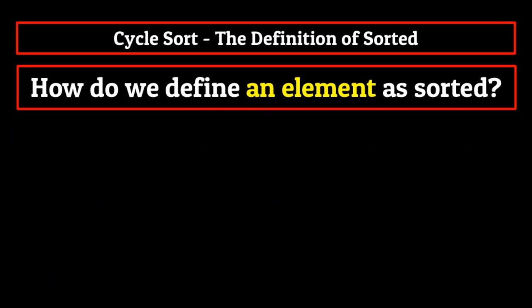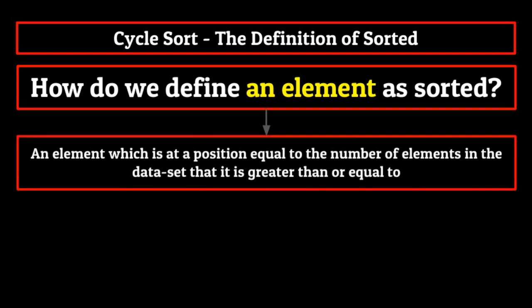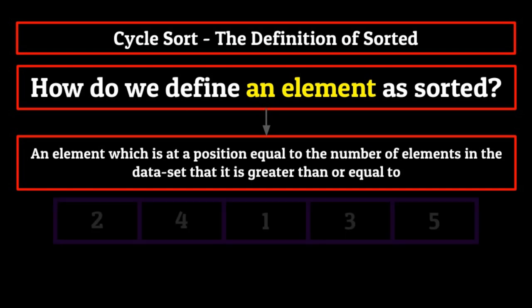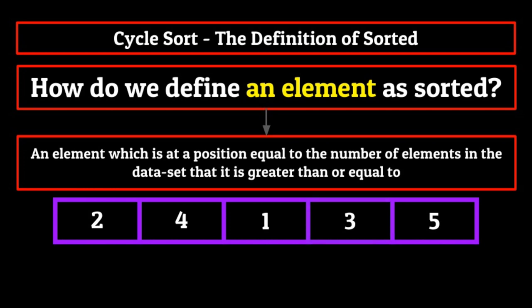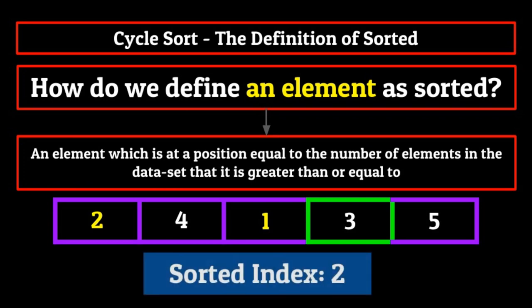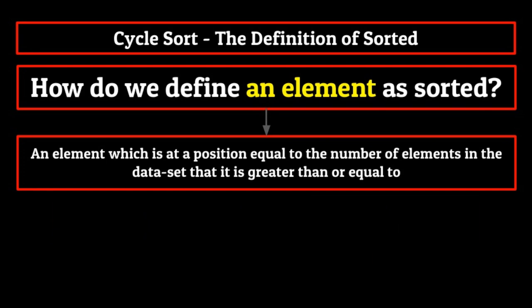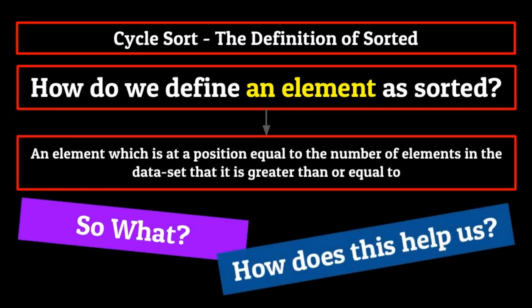There are elements outside the scope of the element at the third index which impact its final sorted position. So if that's not the answer, what is? An element can be considered sorted if it is at a position that is equal to the number of elements in the data set that it is greater than or equal to. Going back to the list we used previously, the element at the third index is greater than both one and two, which means that its sorted index is two. And if you look at the final sorted list, this is indeed the case. So now we have a definitive way to tell whether a certain element in our list is sorted. Just make sure to keep this fact in mind as we delve further into this episode.